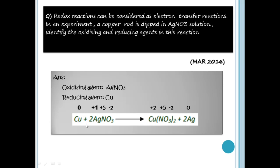Copper in the elemental state is in the free state, so its oxidation number is 0. For AgNO3: I will show you a shortcut — Ag has the NO3 minus ion.